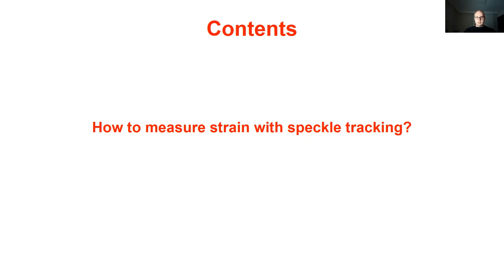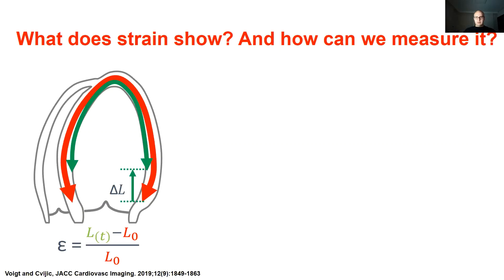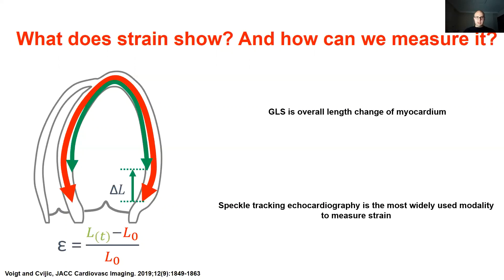How do we measure strain with speckle tracking? Global longitudinal strain (GLS) is the mostly used parameter with speckle tracking images. GLS is the overall length change of myocardium during the heart cycle. It can be calculated from endocardial, mid-wall, or epicardial contours. Speckle tracking echocardiography is the most widely used modality to measure strain. GLS should be measured precisely and appropriately, as there are many sources of variability. Speckle tracking echocardiography can be performed on 2D or 3D images, providing global or regional strain measurements.